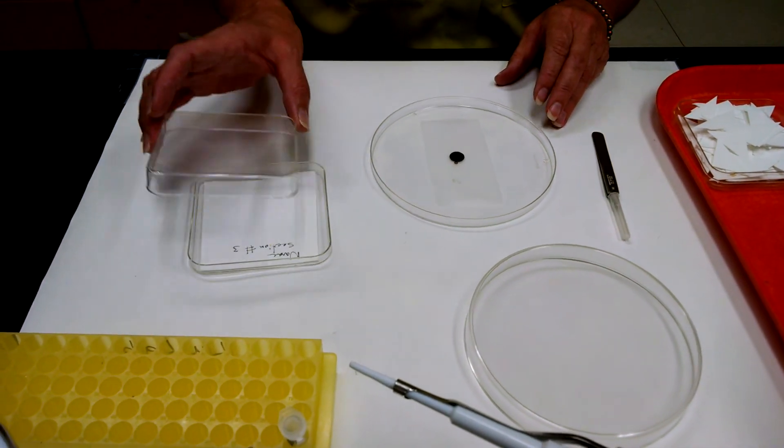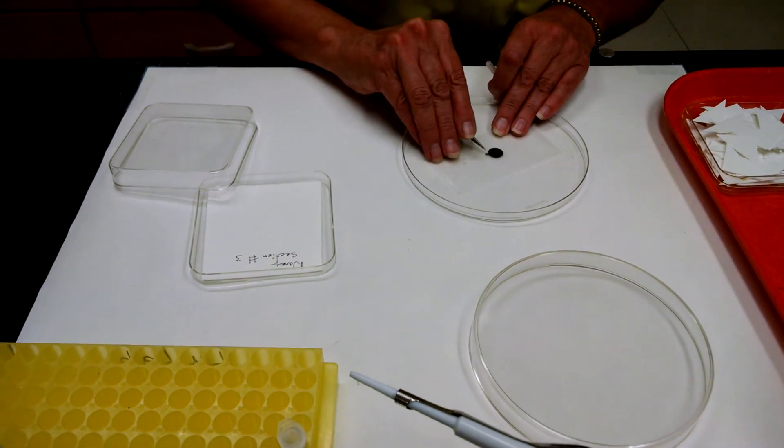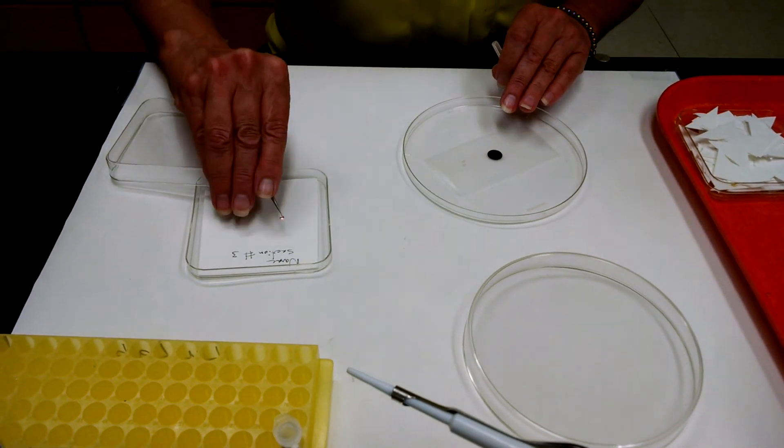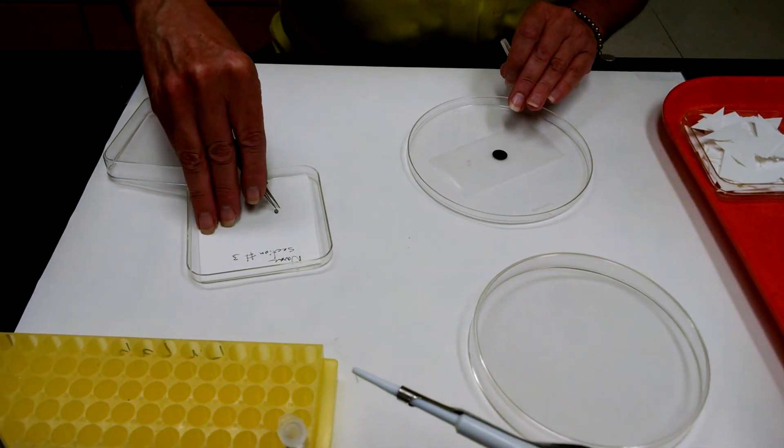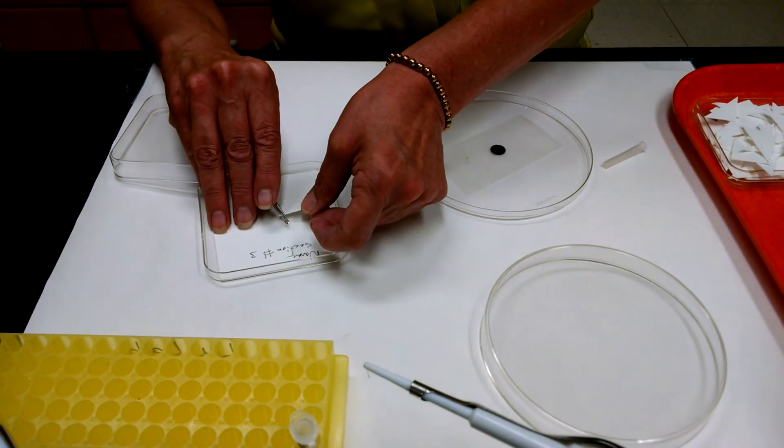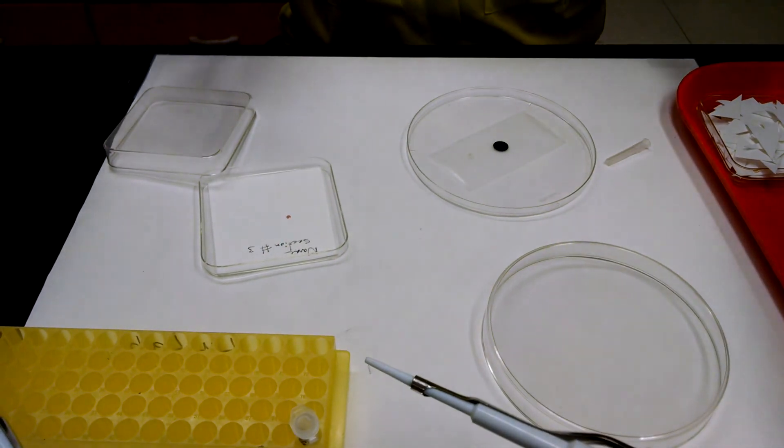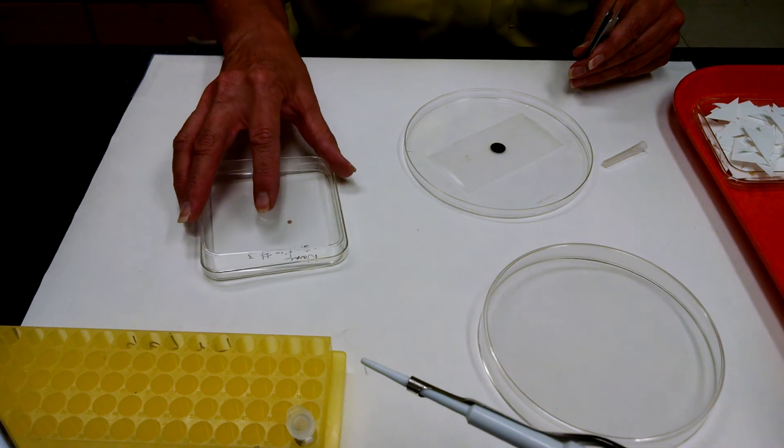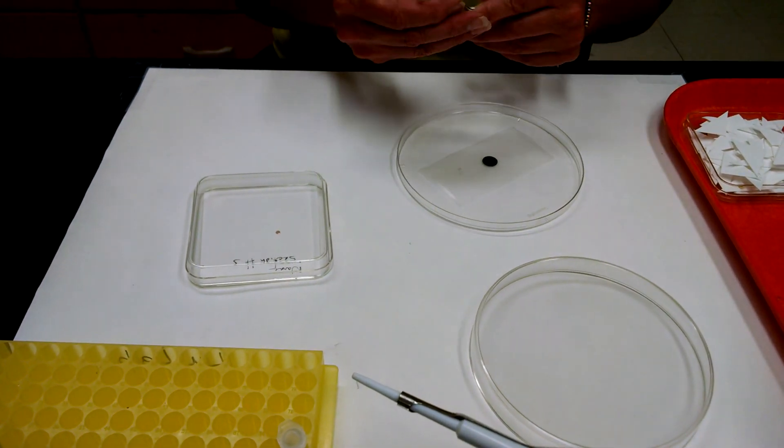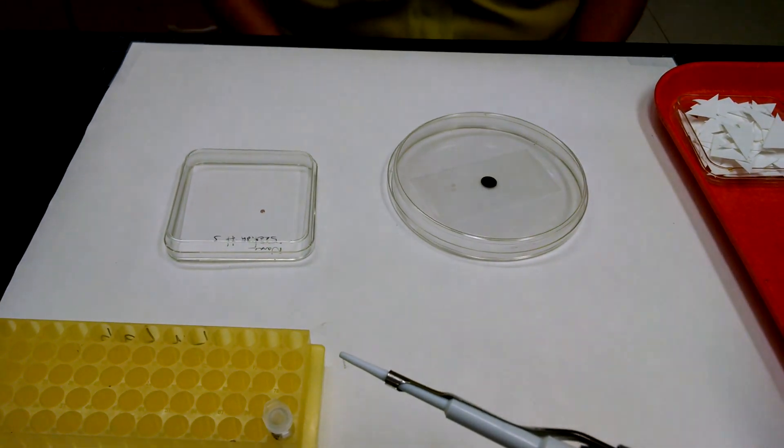So the next thing we're going to do is to gently pick up the grid by the corner by an edge and place it onto the Whatman paper. And sometimes if you get something sticking like this, you can get one of those wicking papers and help it off. Cover it. There will be two grids to a box because you and your partner are going to share a box. And that is negative staining.